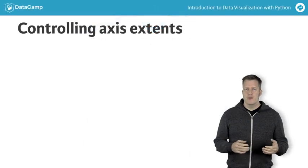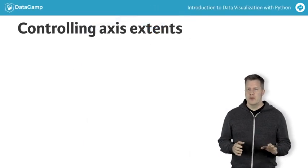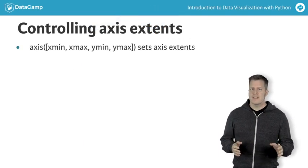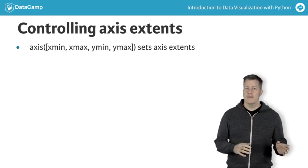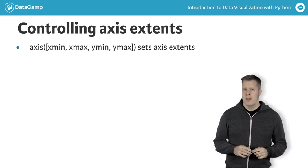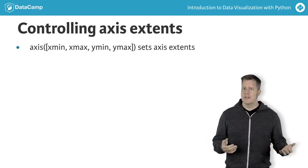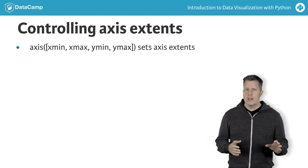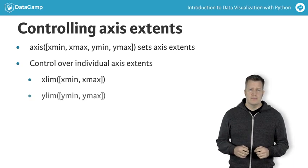Sometimes we want to create a graph and zoom in to a specific region. To do this, the Axis, Xlim, and Ylim commands all control the left, right, upper, and lower limits of the viewable portion of the axes. These can be set all at once using the Axis command, or they can be set individually using Xlim and Ylim.